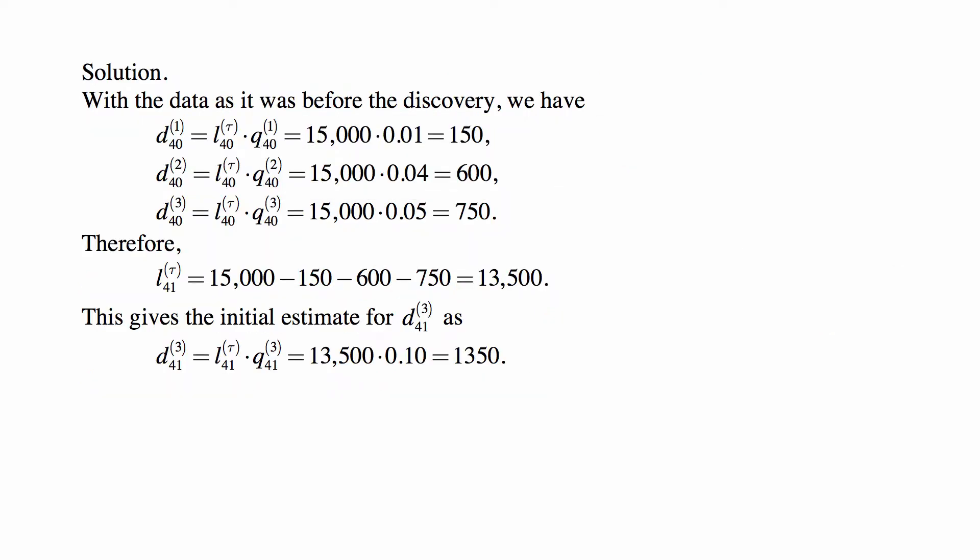So let's look at the calculations in the first year. At age 40, we have 15,000 people. 1% of them or 150 die from cause one, decrement one. 4% of them or 600 die from cause two or decrement two. And 5% of them or 750 die from cause three or decrement three. So the total number of people we see as leaving the group is 150 plus 600, that's 750, plus 750. Again, the total is 1,500 out of 15,000, so 13,500 are left.